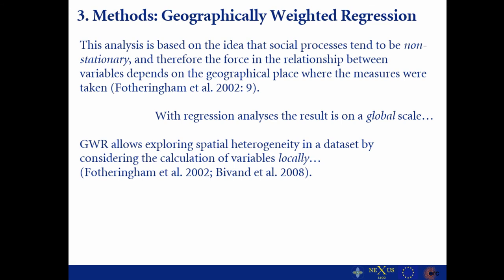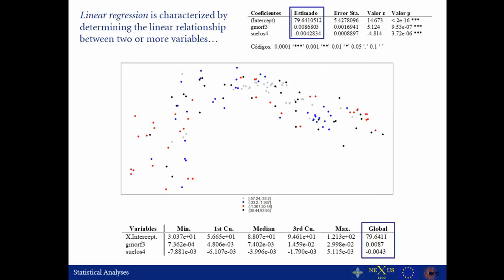The third method is geographically weighted regression. This analysis is based on the idea that social processes tend to be non-stationary, and therefore the forcing relationship between variables depends on the geographical place where the measures were taken. The point process model is based on logistic regression, which calculates the global relationship between dependent and independent variables. We then calculate geographically weighted regression to see whether there is a spatial influence on a particular correlation between dependent and independent variables.